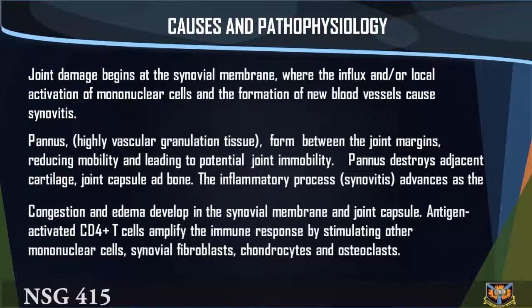Joint damage begins at the synovial membrane where the influx and local activation of molecular cells and the formation of new blood vessels cause synovitis. Pannus — a highly vascular granulation tissue formed between the joint margins — reduces mobility and can lead to potential joint immobility. Pannus destroys adjacent cartilage, joint capsule, and bone.